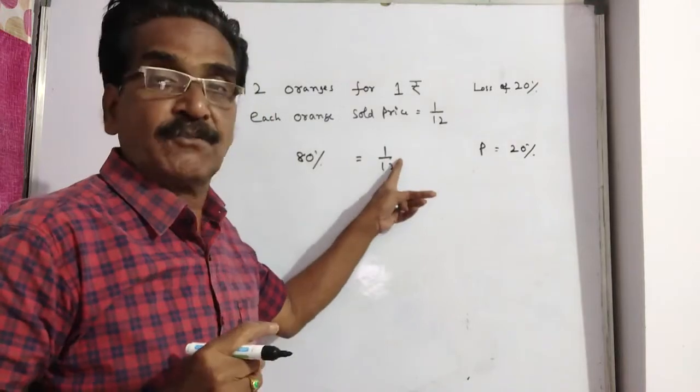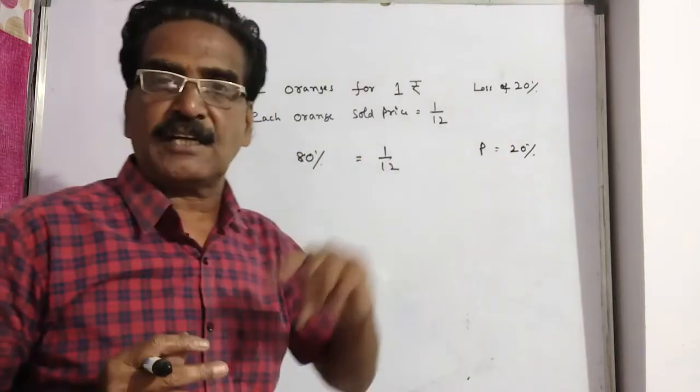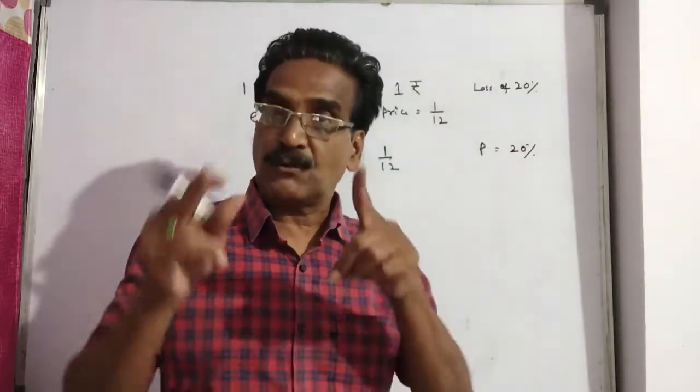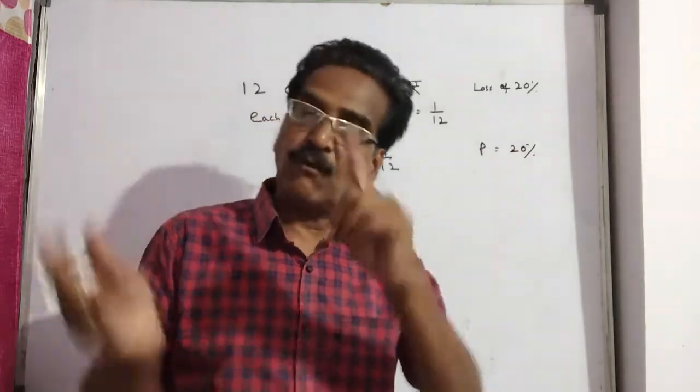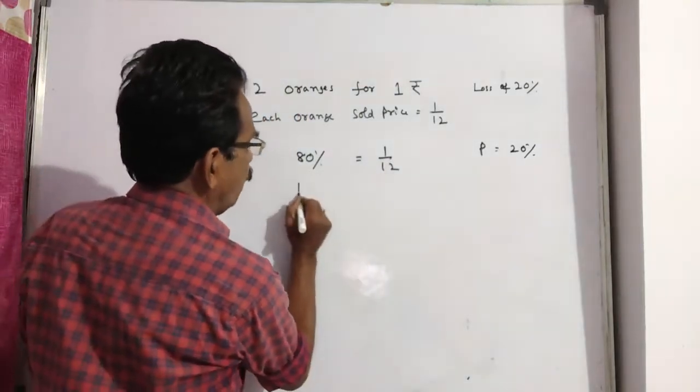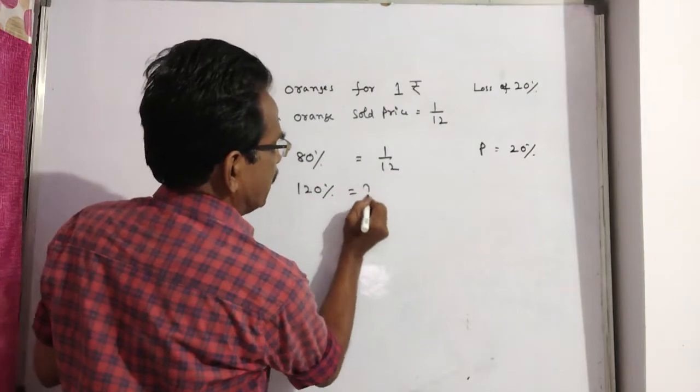That means this 1 by 12 is equal to 80% of the cost price. But now we want 20% profit, that means we have to sell the orange at 120% of the cost price. If 80% is equal to 1 by 12, what is 120%?